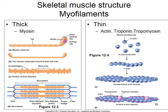Thin filaments are made up of actin, troponin, and tropomyosin. Actin is a globular protein — G-actin molecules hook together to form F-actin, and two F-actin strands interact to form a double helix. The thin filament is many actin molecules bonded together, each with a myosin binding site. Those myosin binding sites get covered by a rope-like protein called tropomyosin.